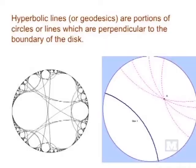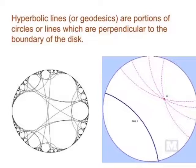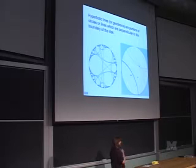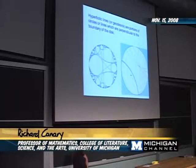Look at this point here — passing through that point, there are all these different lines which do not intersect this line over here. That was the first reason this was considered to be an interesting geometry. In Euclidean space, if I give you a point and a line, there's a unique line through that point which doesn't intersect the other line. This is Euclid's parallel postulate.